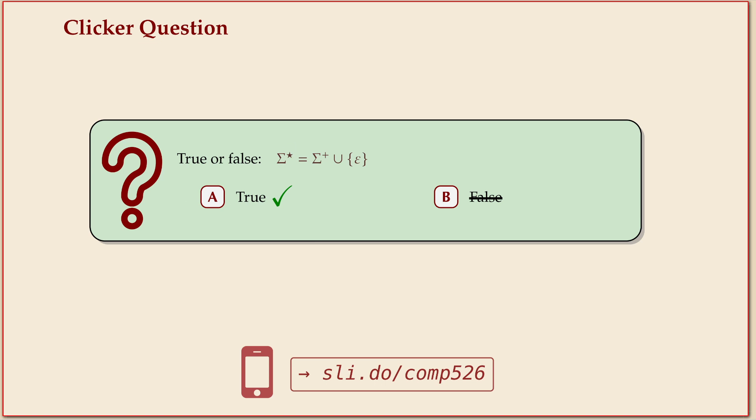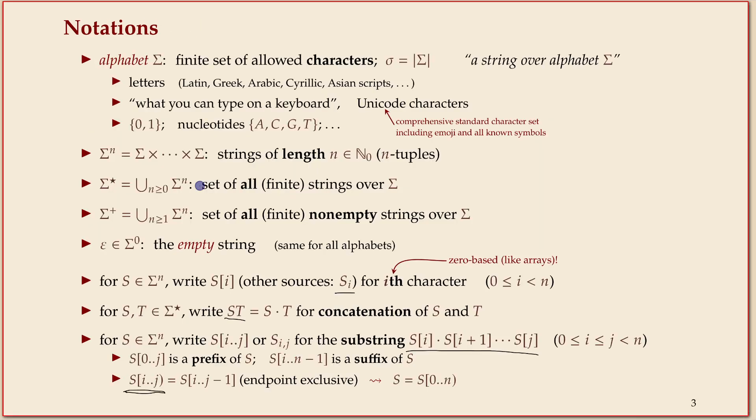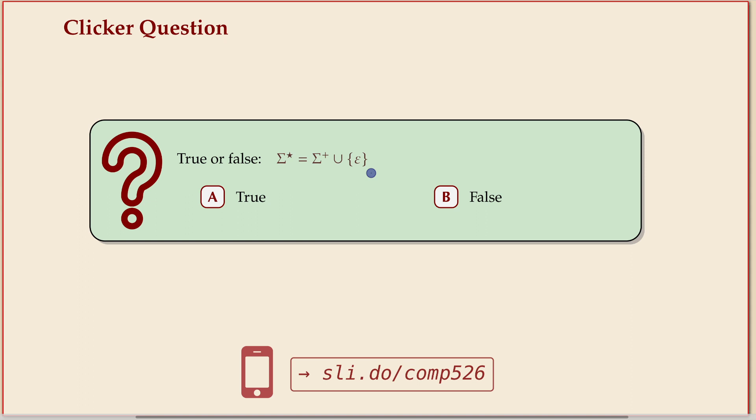So why is it true? Remember, Σ* are all the strings of any length, and that includes length zero. It starts with length zero, and the plus starts with length one. So if I take any string, I can get any string of arbitrary length if it either has length at least one or length zero. I've covered all options here with these two.